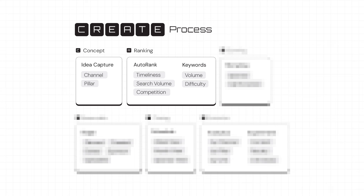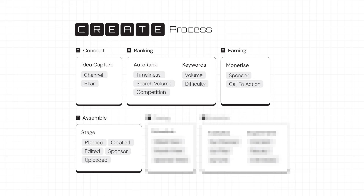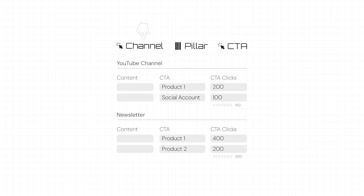Earning: track sponsors and CTAs, or call to actions. Assemble: create the piece of content, moving it from the planning stage through to the upload stage. Timing: upload or schedule the content. And lastly, Examine: now that it's live, let's review the analytics by channel, pillar, and call to action. Then run experiments with the next piece of content, looking at the view results and the clicks on our CTAs.